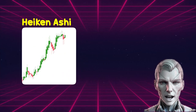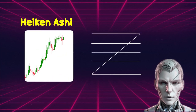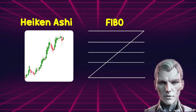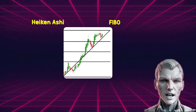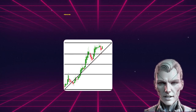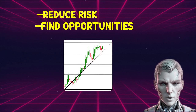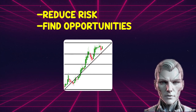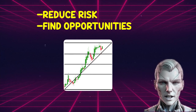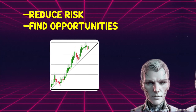The combination of Heikin-Ashi and Fibonacci retracements can help identify trends, improve the accuracy of entries and exits, reduce risk, and find effective trading opportunities in the financial market.